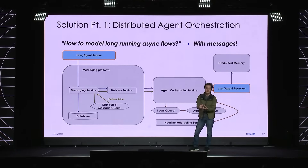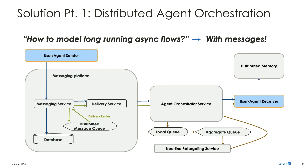This leads into the penultimate section — the new infrastructure we built, which I call our agent platform. To model long-running asynchronous flows, we modeled this as precisely a messaging problem. LinkedIn already has a really robust messaging service serving countless members every day, so we extended this to also include agentic forms of communication — namely agent-to-agent messaging, but also user-to-agent messaging. We even built a near-line flow where if messages fail, they'll be automatically picked up and retried via a queuing system.